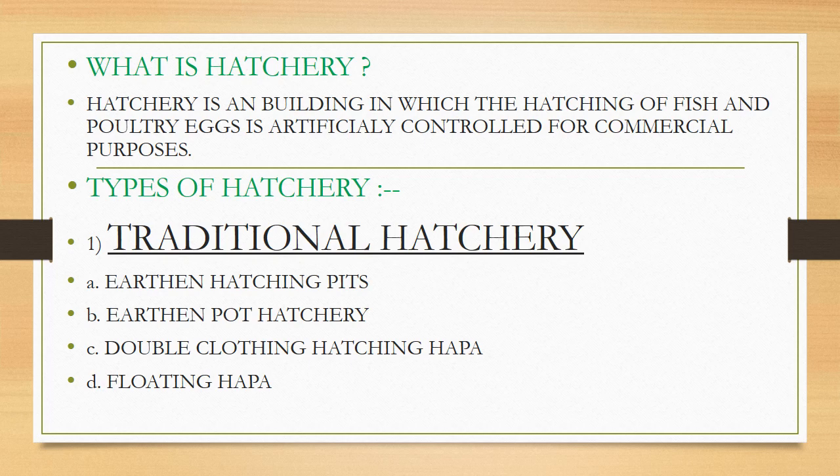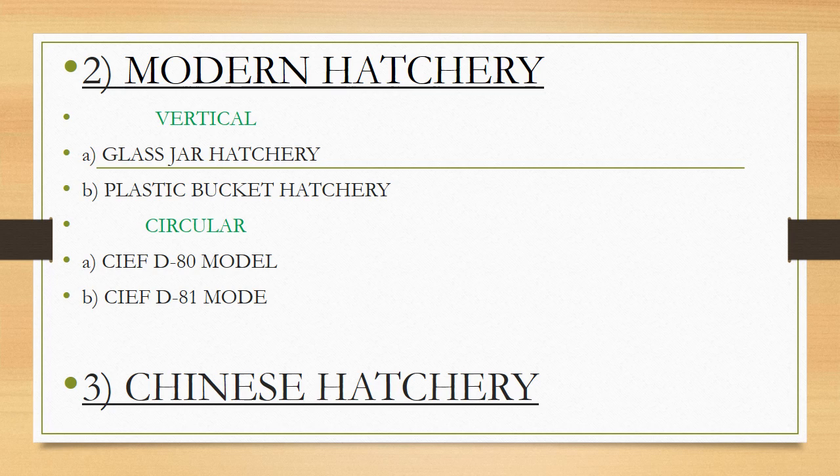In modern hatchery there are two types: vertical and circular. Under vertical, there are two types — glass jar hatchery and plastic bucket hatchery. In circular hatchery there are two types: CIFD 80 model and CIFD 81 model. And finally, Chinese hatchery.